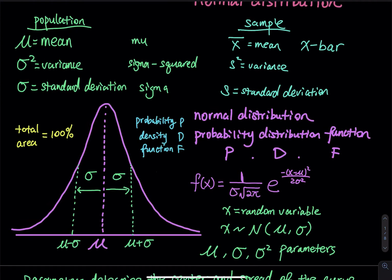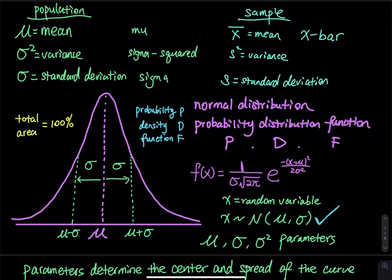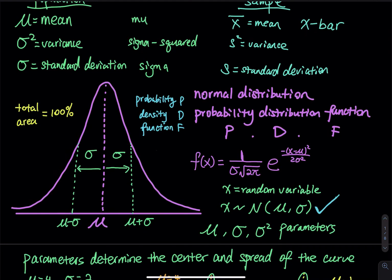The random variable x follows normal distribution. We write: x follows the big N, which stands for normal distribution, with mean mu and standard deviation sigma. The mu, sigma, and sigma squared are called parameters because they determine the shape, center, and spread of the bell curve.